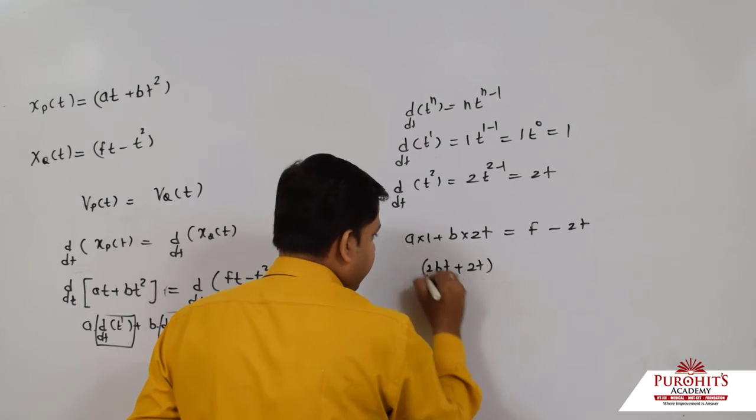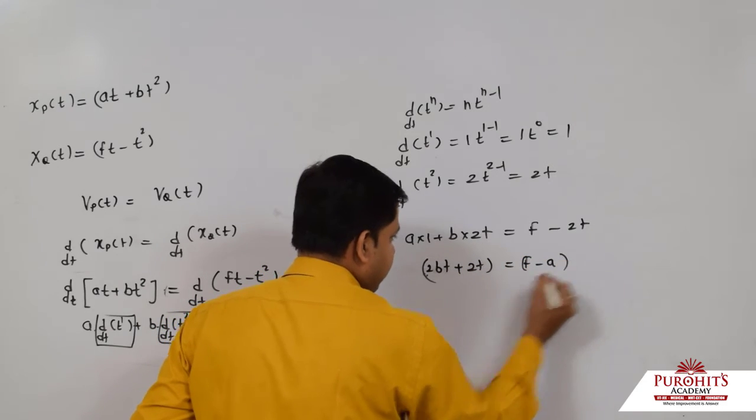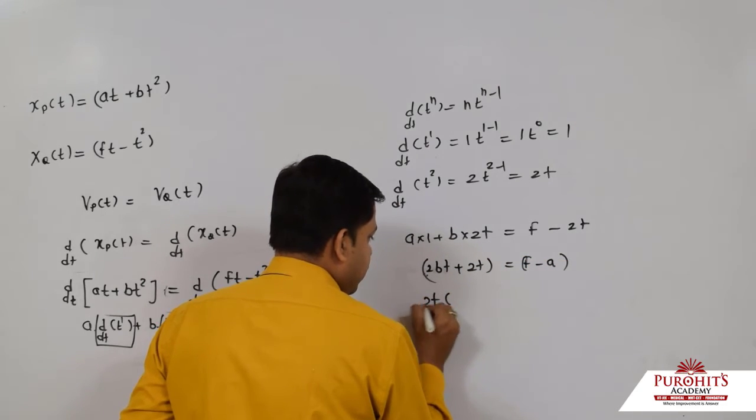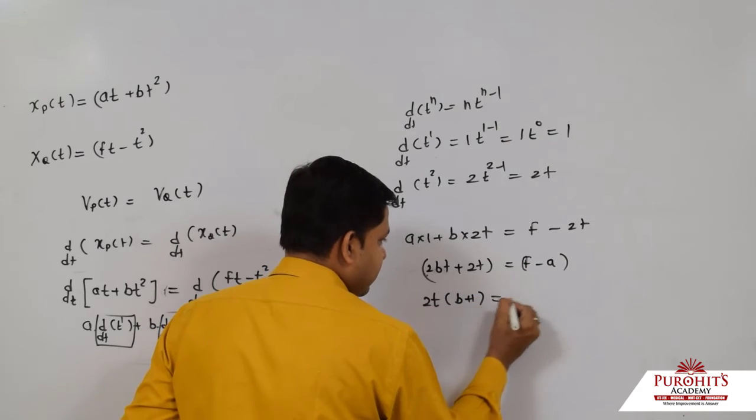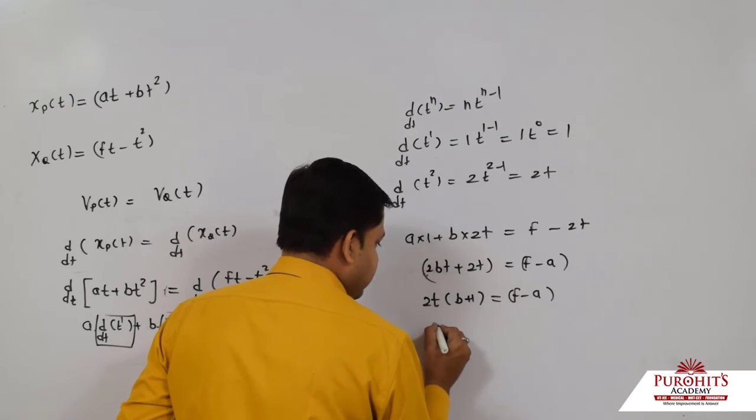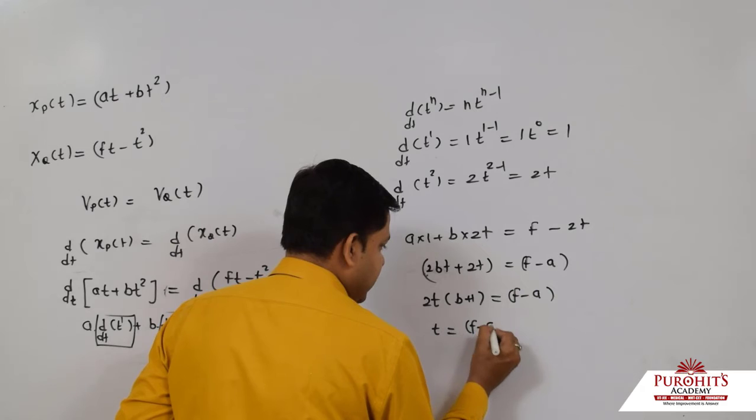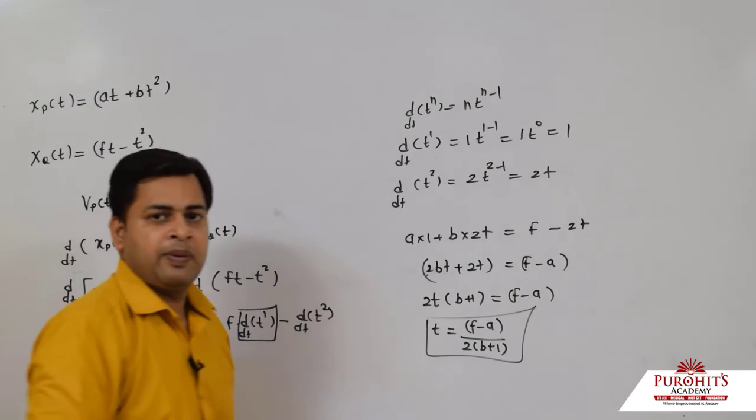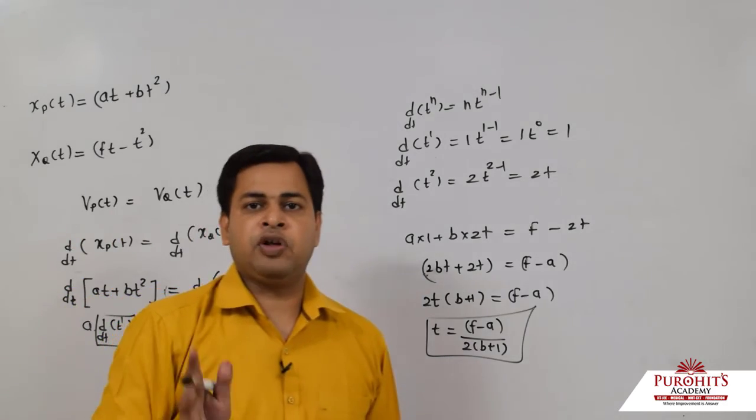Moving terms: 2bt + 2t = f - a. Factor out 2t common: 2t(b + 1) = f - a. Therefore, t equals (f - a) divided by 2(b + 1). So this will be the time when both will have the same velocity.